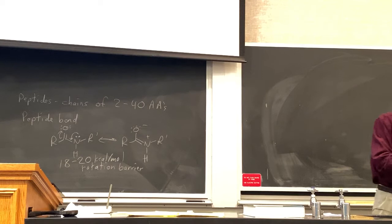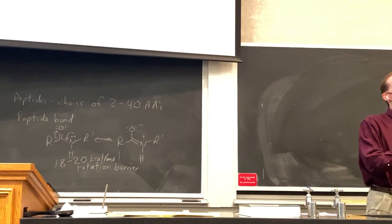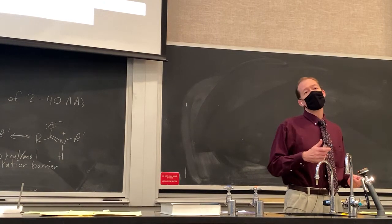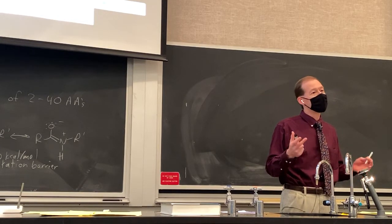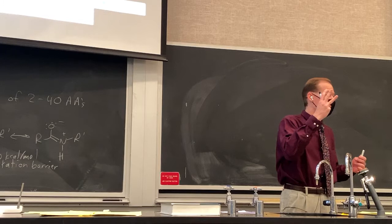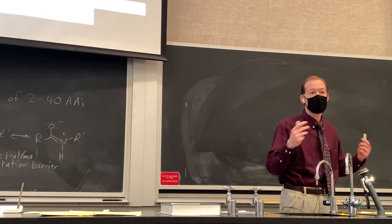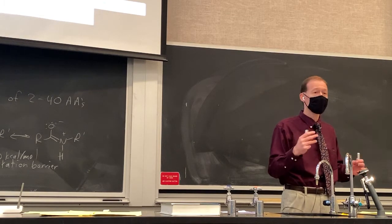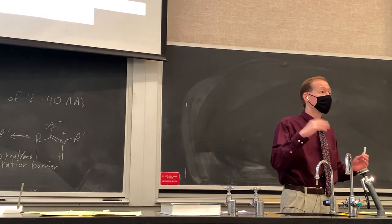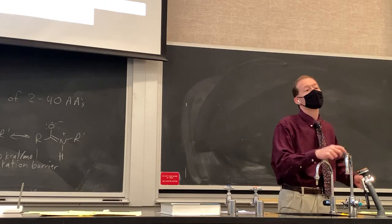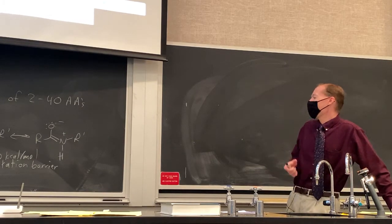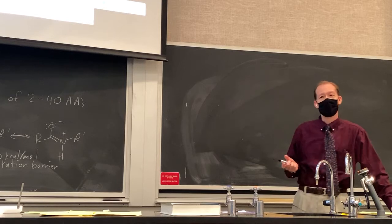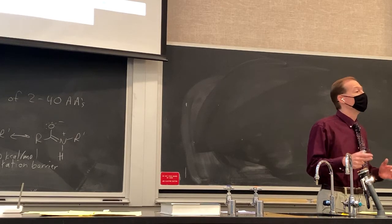For comparison, back in chapter four when we were learning about alkanes and Newman projections, the barrier for rotation about the carbon-carbon sigma bond in ethane is 3 kilocalories per mole — that rotation happens very, very rapidly at room temperature. There's about 20 kilocalories per mole of energy available at room temperature, so processes with an activation energy of 20 kilocalories per mole or less can occur at room temperature. The rotation about the carbon-nitrogen bond of an amide can occur at room temperature, but it's going to be slow.